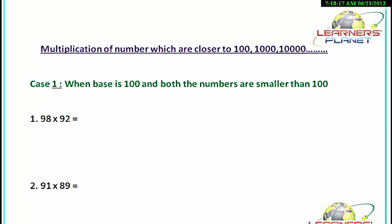As a first case, we will be taking when the base is 100 and both the numbers are smaller than 100. When the base is 100, both numbers or any one of them is closer to 100. In this case, we will be taking the difference of the numbers from 100. Let's see the example: 98 into 92.